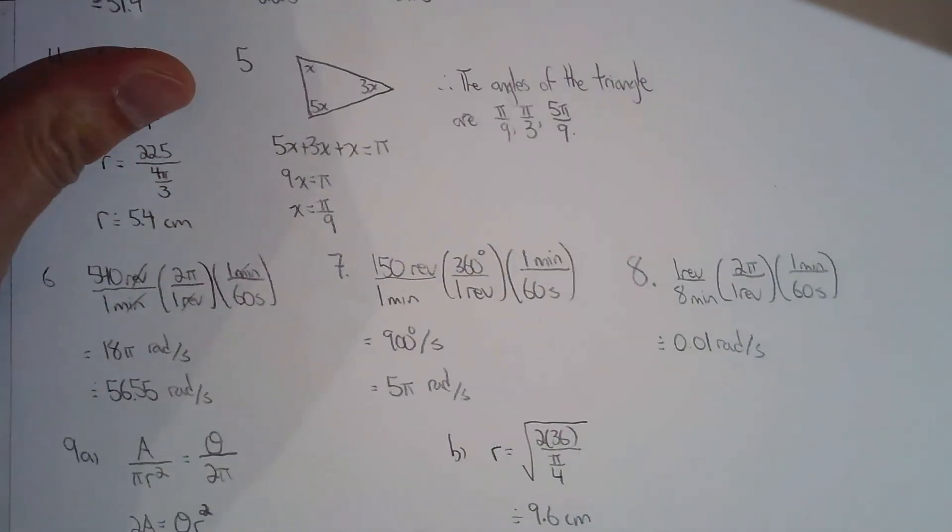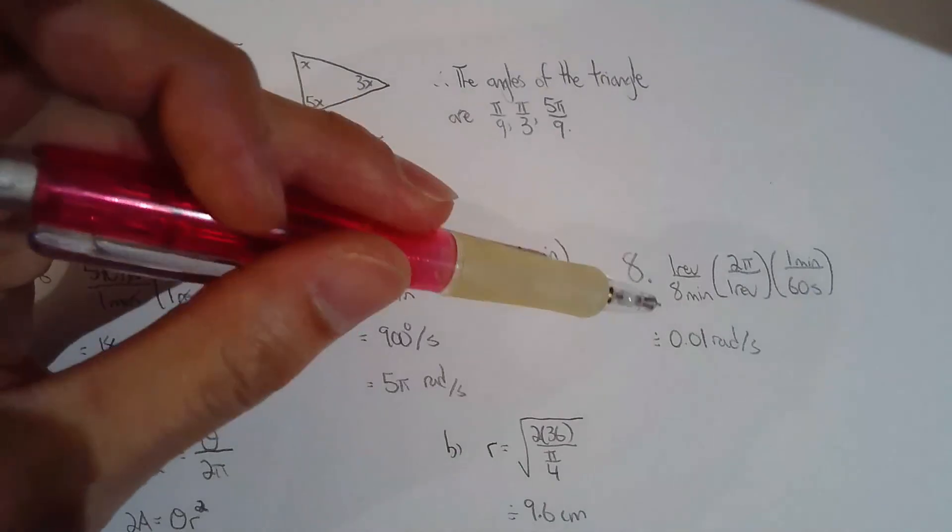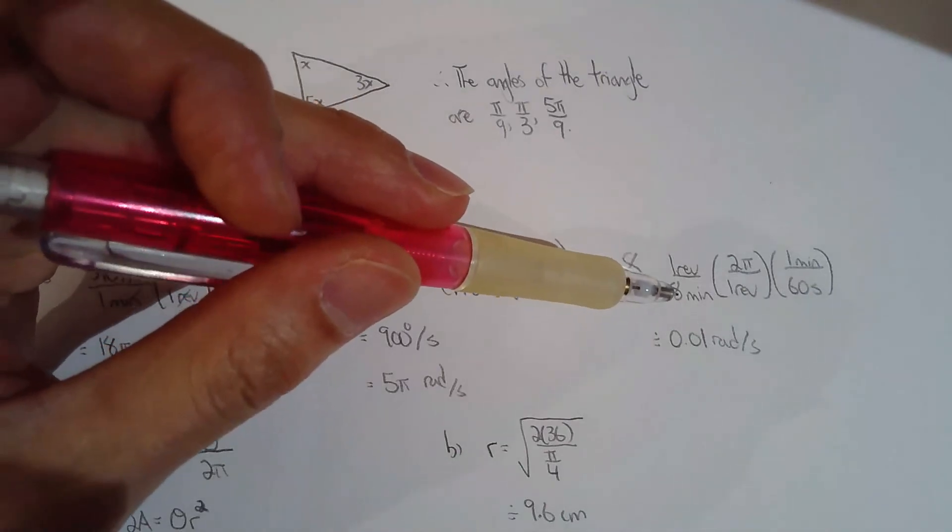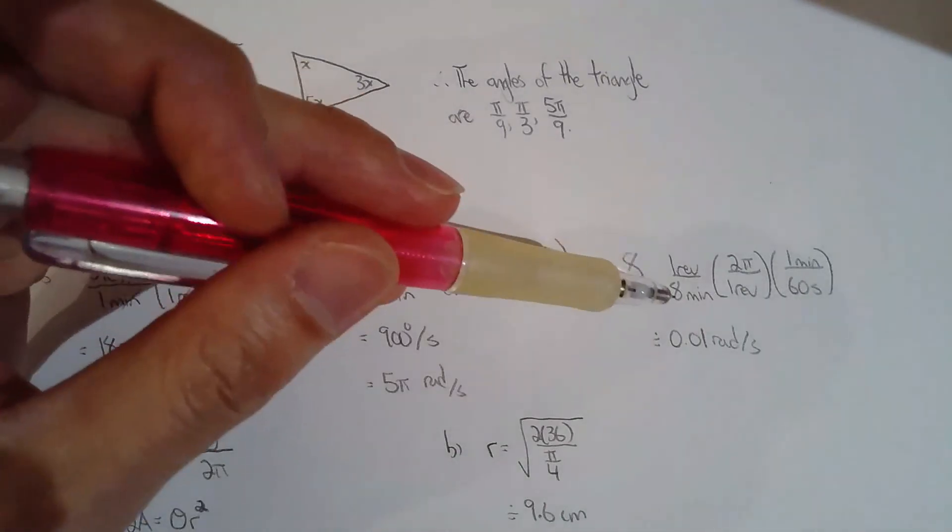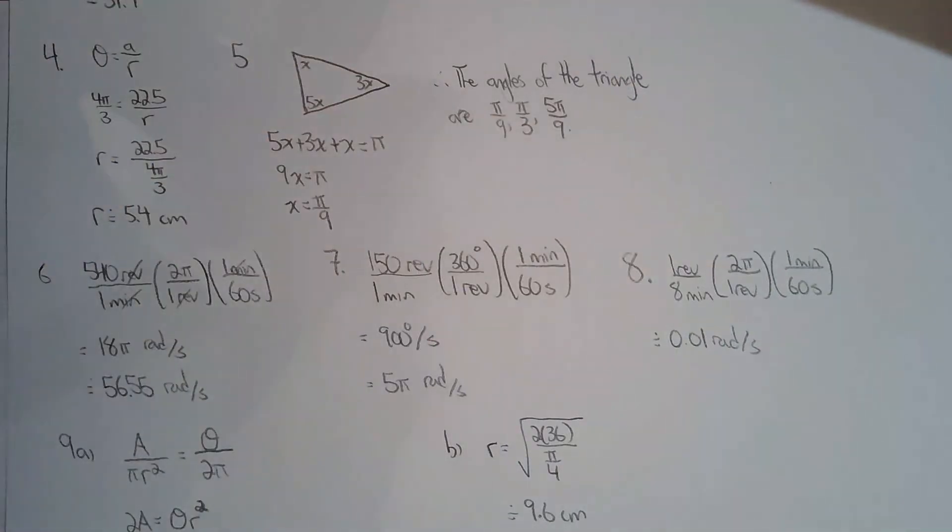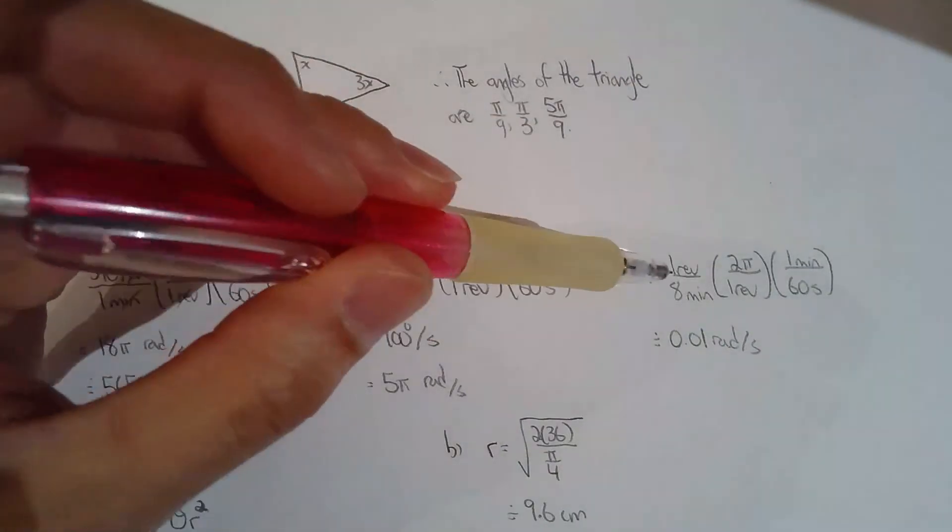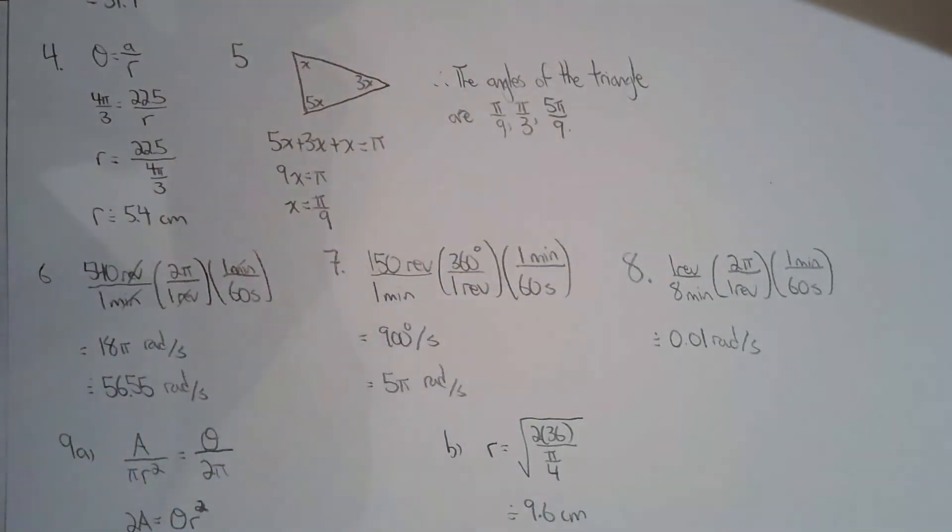Number 8: you have one revolution in eight minutes, and then they want to change it to radians per second. No problem—multiply by the conversion factors and you're done. This is really slow, by the way. One full revolution in eight minutes. Yeah, that's moving very slowly around a point.